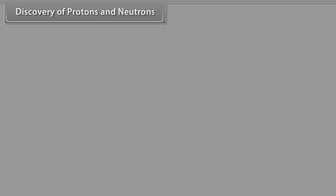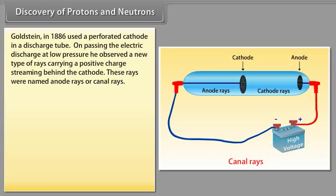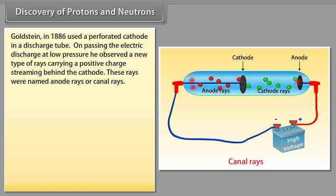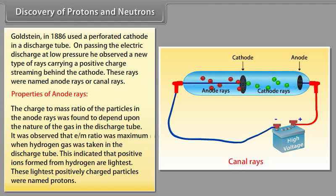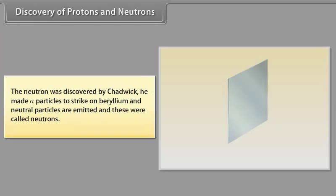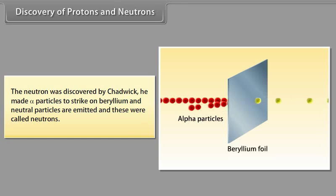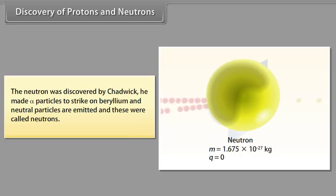Discovery of protons and neutrons: Goldstein in 1886 used a perforated cathode in a discharge tube and observed rays carrying a positive charge streaming behind the cathode — named anode rays or canal rays. The E/M ratio of anode rays depended on the nature of the gas; it was maximum with hydrogen gas, indicating that the lightest positive ions from hydrogen are called protons. Neutrons were discovered by Chadwick, who made alpha particles strike beryllium, producing neutral particles called neutrons.